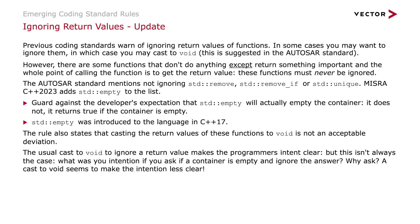Previous coding standards warn of ignoring return values from functions. In some cases you may want to ignore them, in which case you can cast to void, as suggested in the AUTOSAR standard. However, there are some functions that don't do anything except return something important — the whole point of calling the function is to get the return value — and these functions' returns must never be ignored. The AUTOSAR standard mentions not ignoring returns from std::remove, std::remove_if, or std::unique. MISRA C++2023 adds std::empty to the list, guarding against the developer expectation that std::empty will actually empty the container — in fact it doesn't; it just returns true if the container is empty. This is a feature introduced in C++17. The rule also says casting the return value of these functions to void is not acceptable, because if you ask whether a container is empty and then ignore the answer, why did you ask in the first place? A cast to void seems to make the intention less clear.